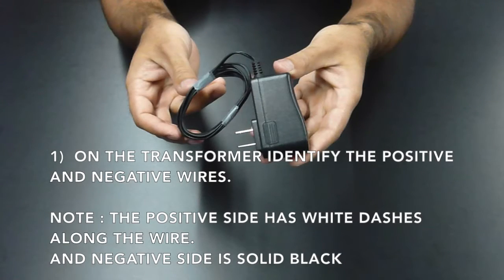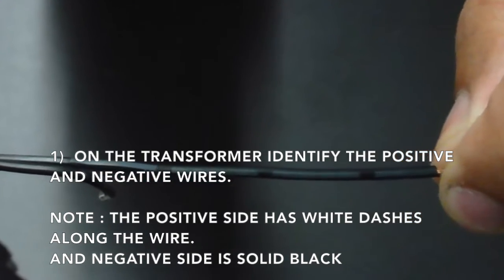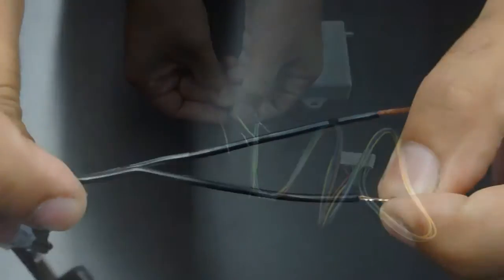On the transformer, identify the positive and negative wires. Note that the positive has white markings along the wire and the negative is solid black.